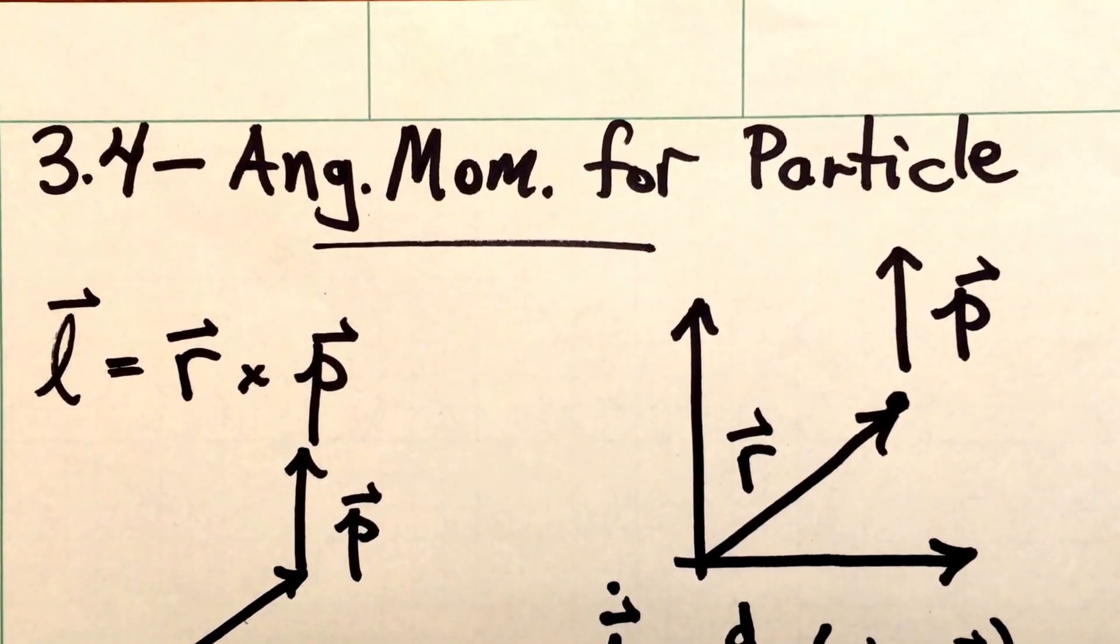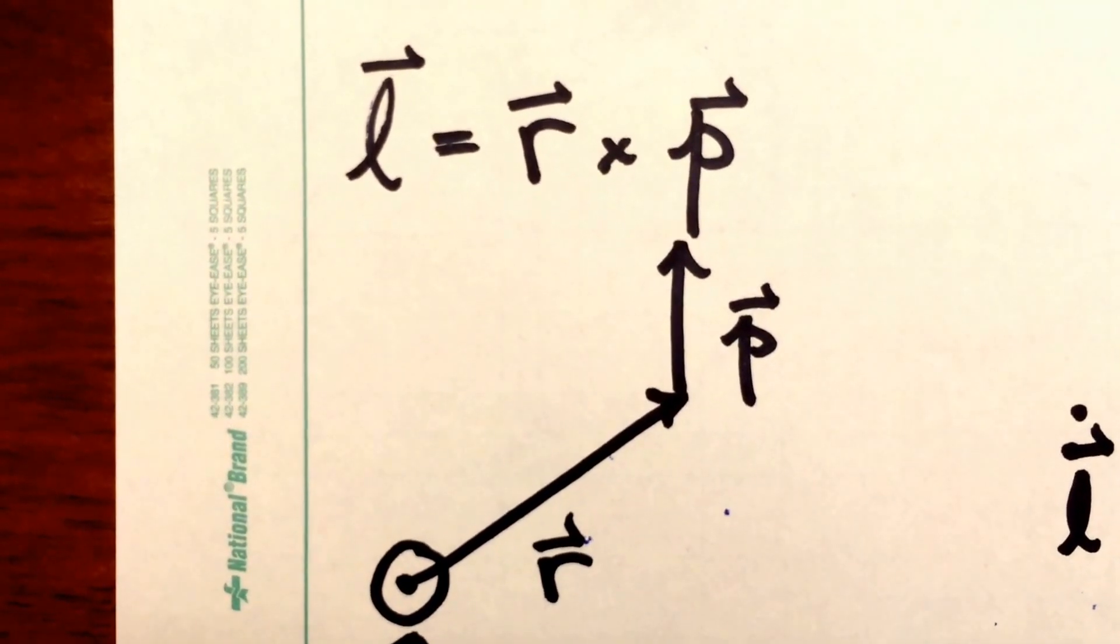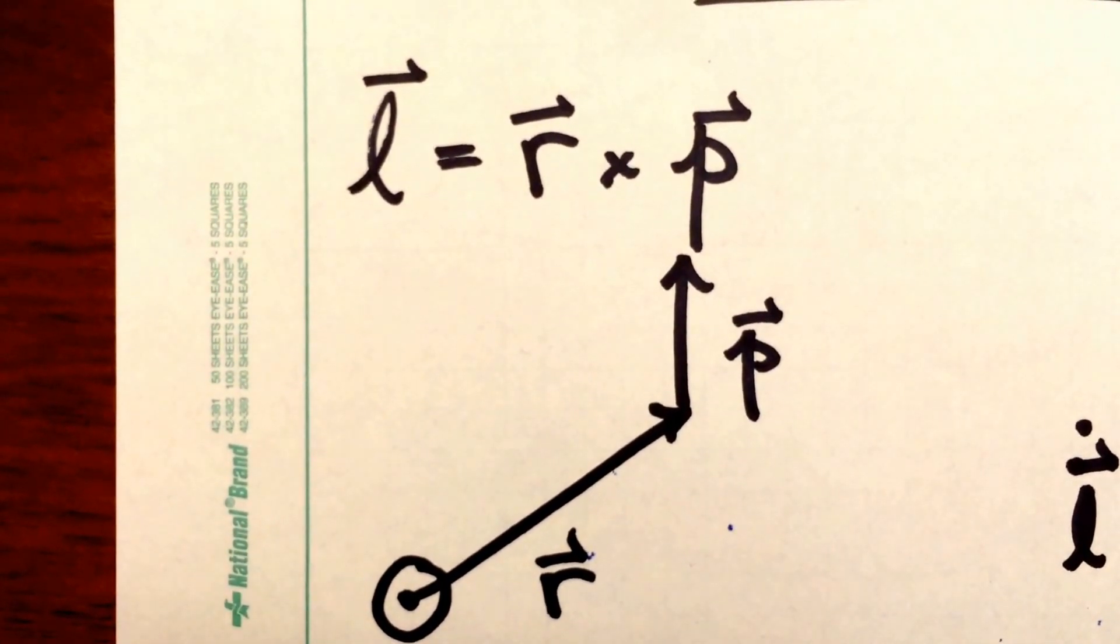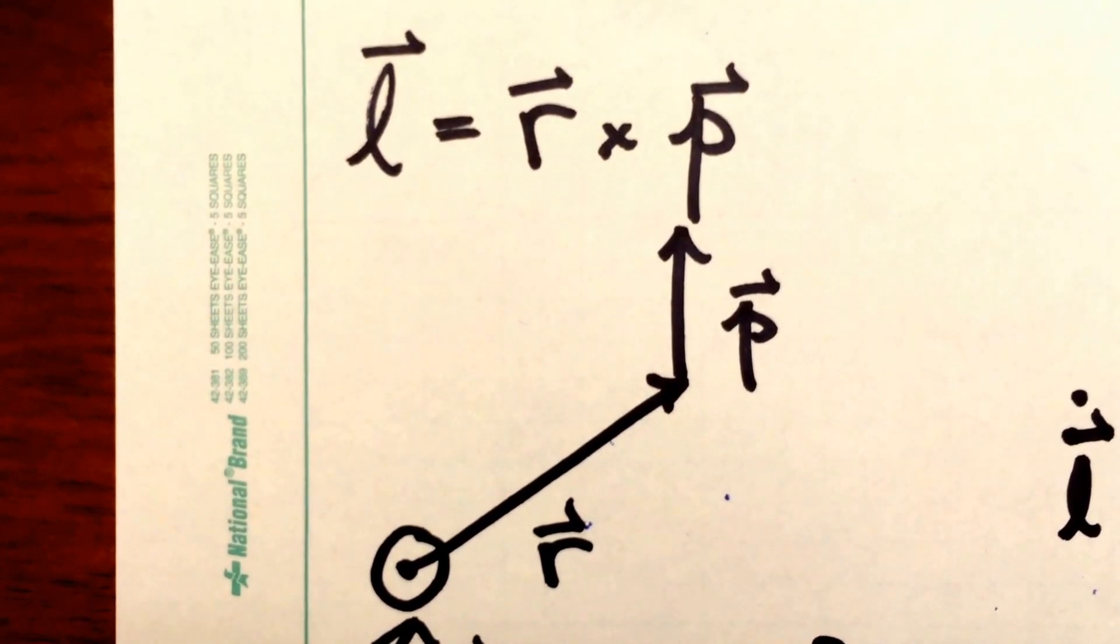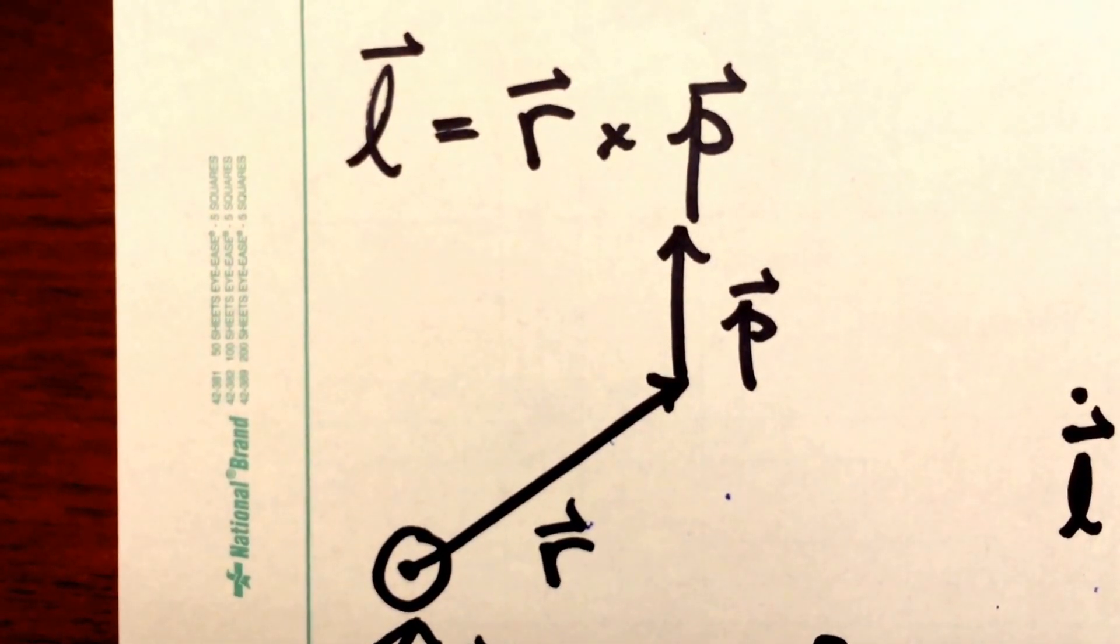In this section, we'll discuss the angular momentum of a single particle. You may recall that the angular momentum vector l is defined as the cross product between r, the position vector, and p, the momentum vector.